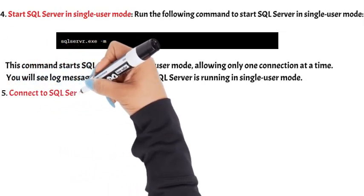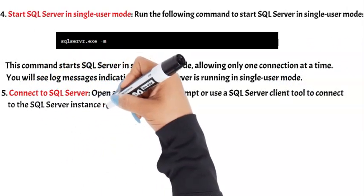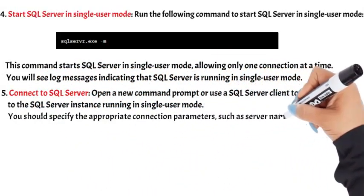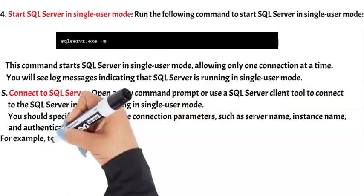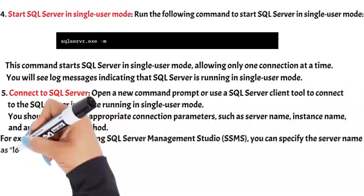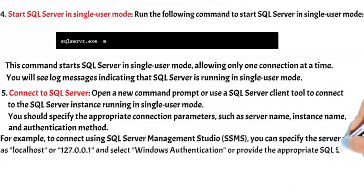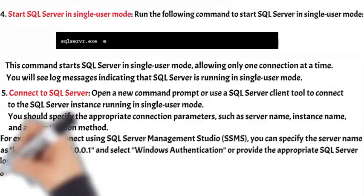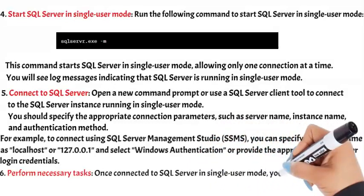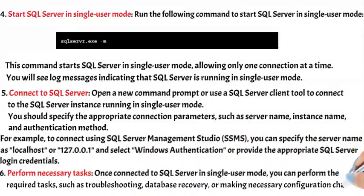Step 5: Connect to SQL Server. Open a new Command Prompt or use a SQL Server client tool to connect to the SQL Server instance running in Single User Mode. You should specify the appropriate connection parameters such as server name, instance name, and authentication method. For example, to connect using SQL Server Management Studio (SSMS), you can specify the server name as localhost or 127.0.0.1 and select Windows Authentication or provide the appropriate SQL Server login credentials. Step 6: Perform Necessary Tasks. Once connected to SQL Server in Single User Mode, you can perform the required tasks such as troubleshooting, database recovery, or making necessary configuration changes.